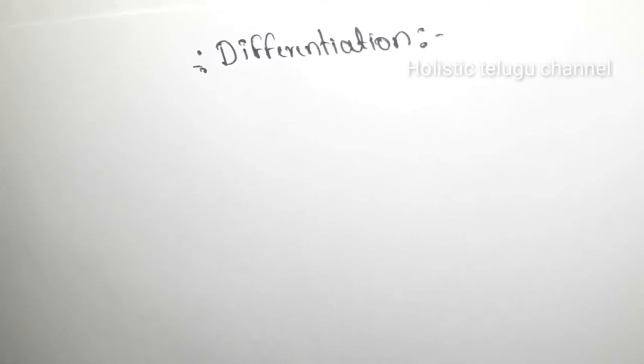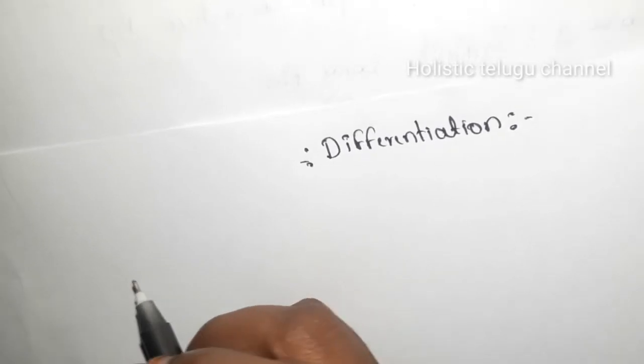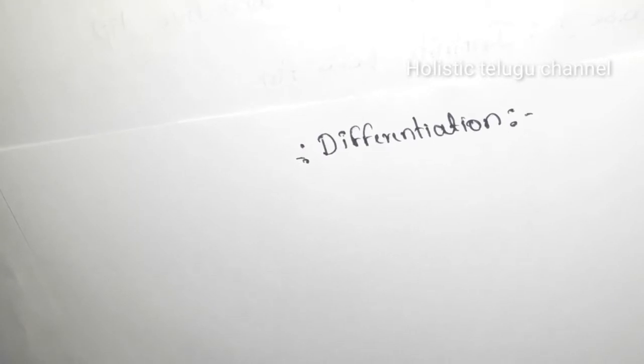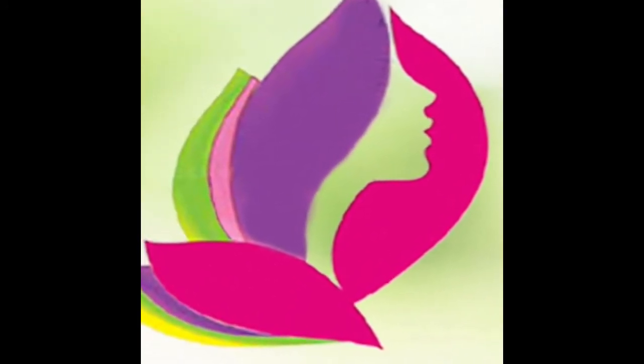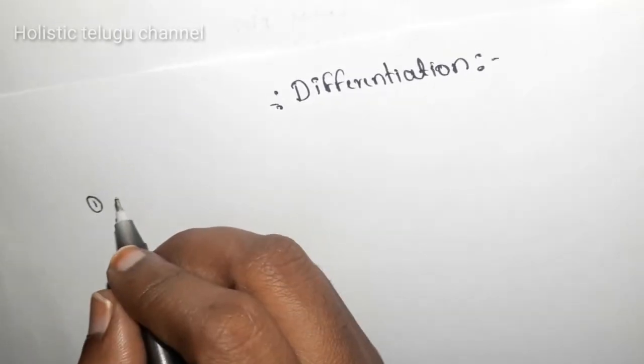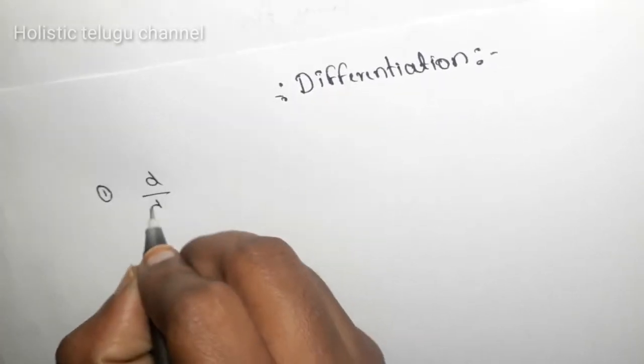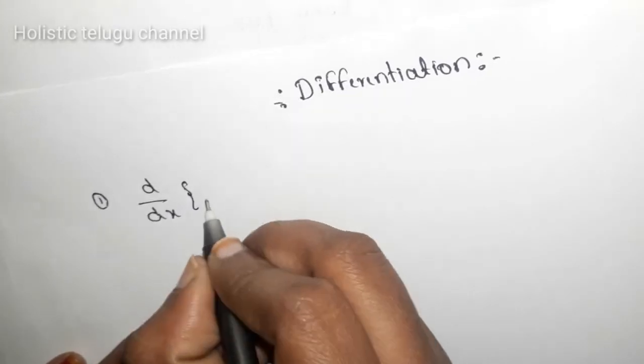Now, we are going to talk about properties. In these properties, the first one is d by dx of constant.